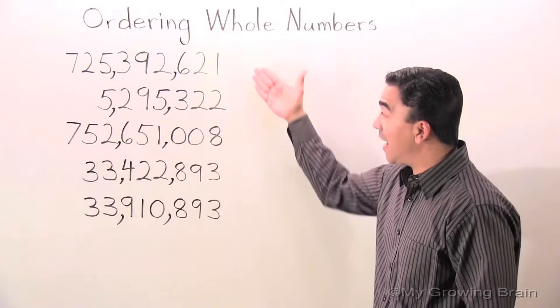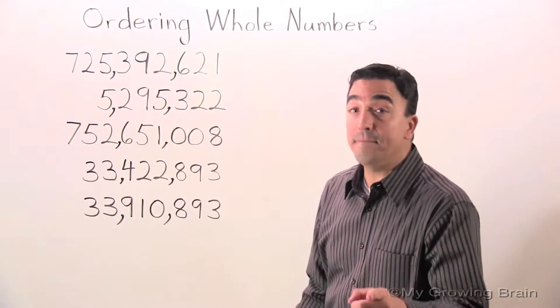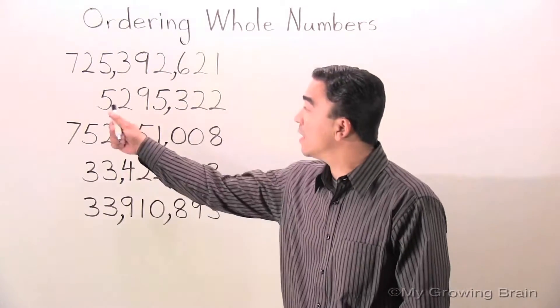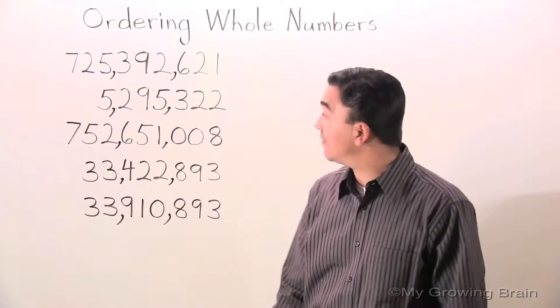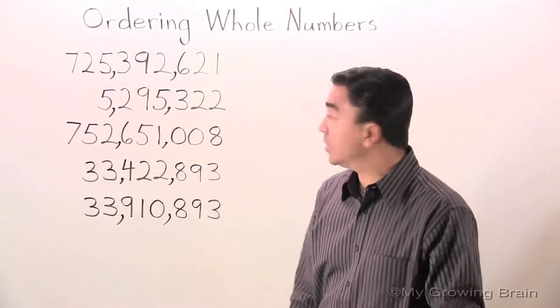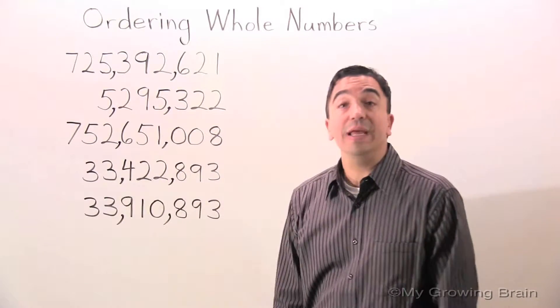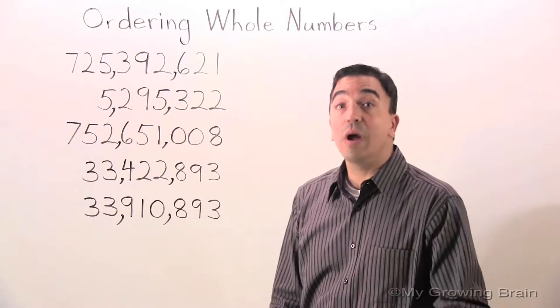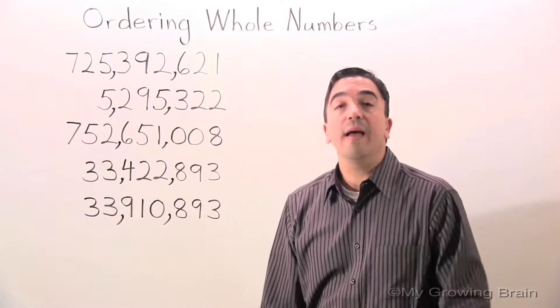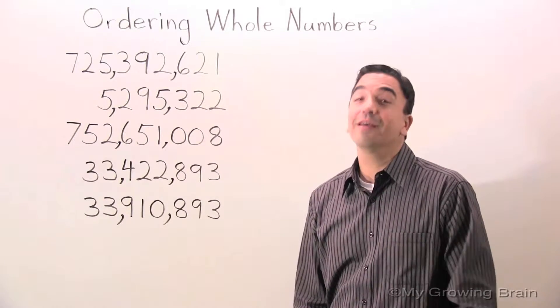As you can see, there are five numbers on the board: 725,392,621; 5,295,322; 752,651,008; 33,422,893; and last but not least, 33,910,893.